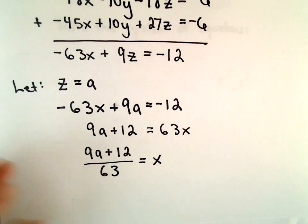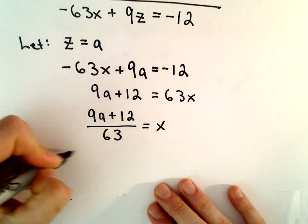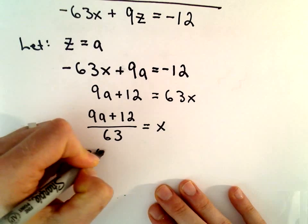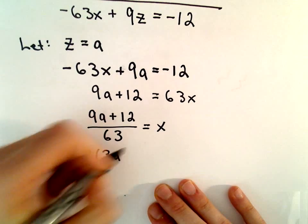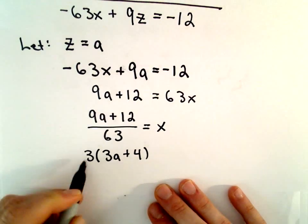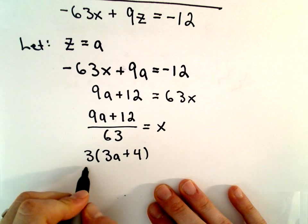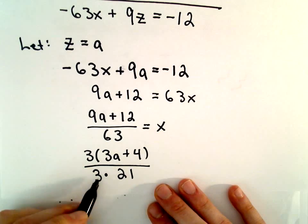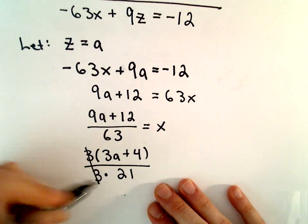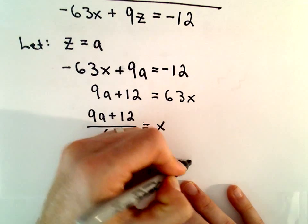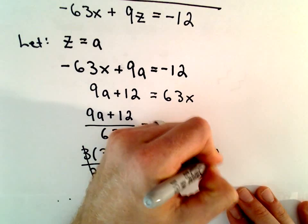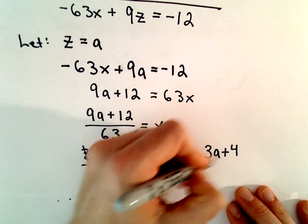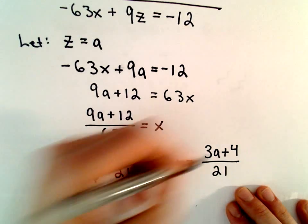I think we can even reduce this a little bit. We could factor a 3 out of the numerator. 3 times 3a would be 9a. 3 times positive 4 would give us positive 12. Well, 3 multiplied by 21 would give us 63. So we can cancel out the 3 and say x is the same thing as 3a plus 4 over 21.